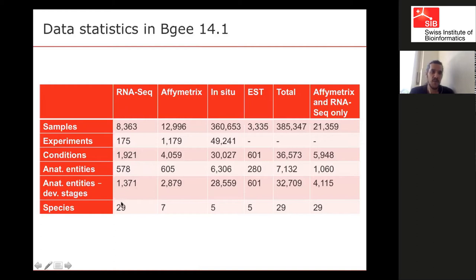From RNA-seq data, we have on average only about 20 organs per species, while for in situ we have an average of more than 1,000 organs. So there are large differences between data types.